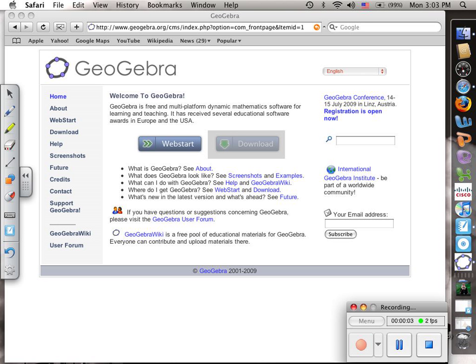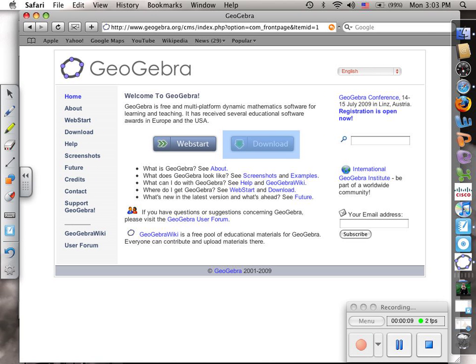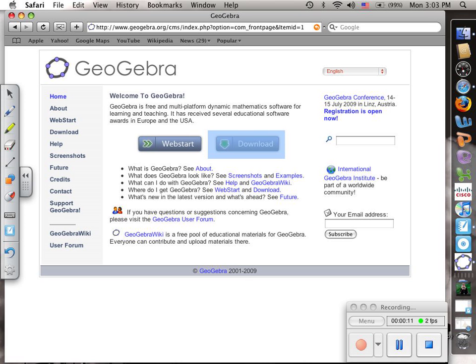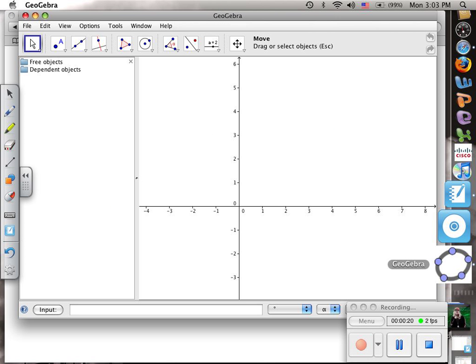GeoGebra is an interactive geometry program that is free to download and use. Go to their website www.geogebra.org and you can either click to web start it or download it. Once it's downloaded, you have this program on your computer.